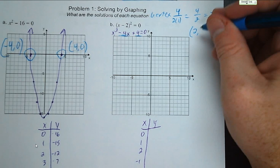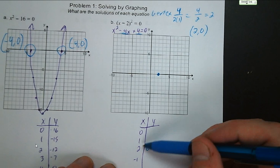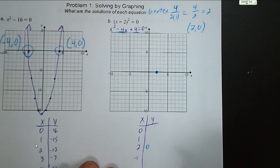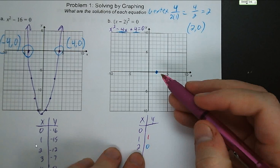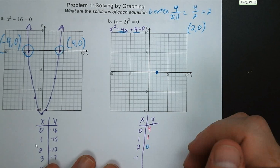Starting from the vertex at two zero, going left: at x equals one, one minus two is negative one, negative one squared is one, so the point is one, one. At x equals zero, zero minus two is negative two... wait — zero minus two is negative two, squared is four. And at x equals negative one, negative one minus two is negative three, negative three squared is nine.